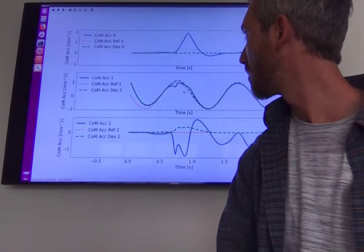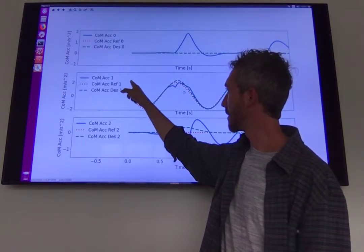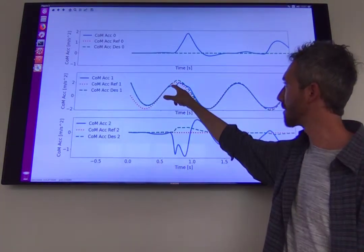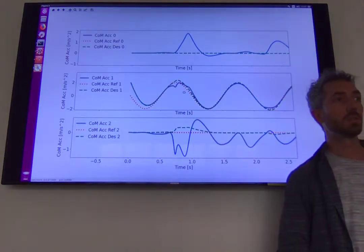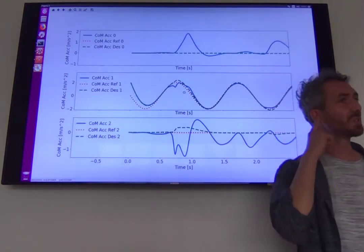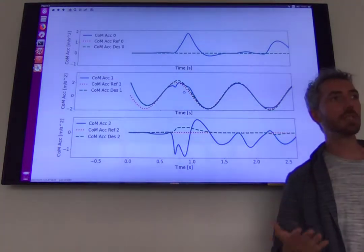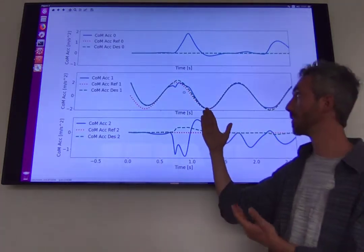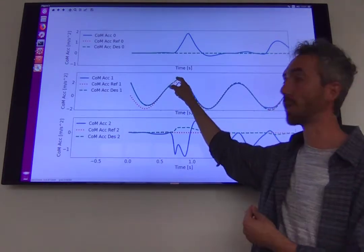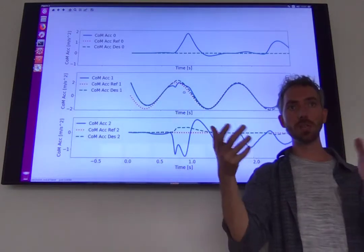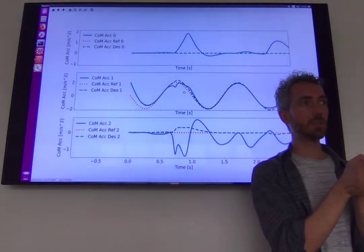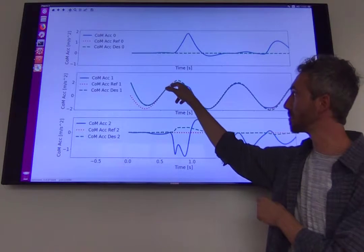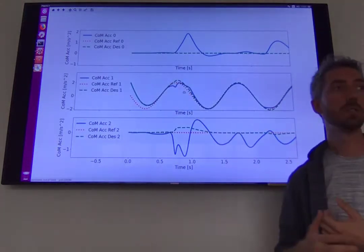So in the beginning everything is fine. We have something very similar to before, so the real and the desired are the same. But then look here, what happens: the real and the desired are no longer the same. What does it mean? Yeah, there is probably some of the limits of the problem, which could be the friction cone constraints for instance, that are preventing the controller to achieve the acceleration that we ask for. So even if we have a cost function that is saying I would like to achieve this acceleration for my center of mass, the solver cannot find a solution that achieves this acceleration, so it tries to achieve an acceleration that is as close as possible to the desired one, but is not exactly the desired one.